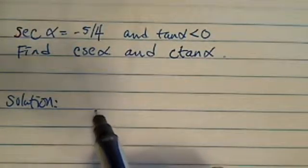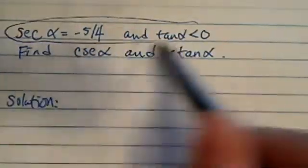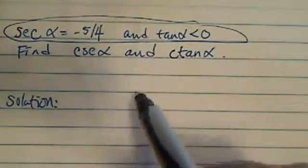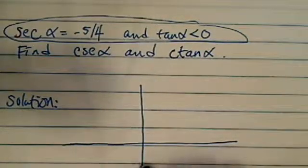Secant of alpha equals minus 5 over 4 and tangent alpha less than 0. Find cosecant alpha and cotangent alpha. These two conditions tell you which quadrant the angle is in, so what you need to do is check the quadrant first.